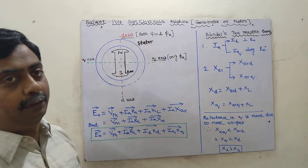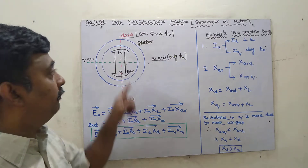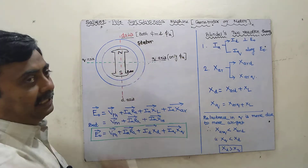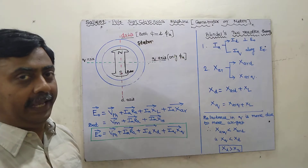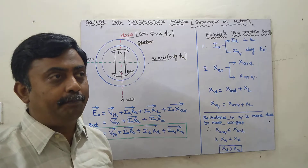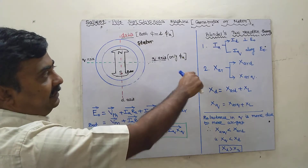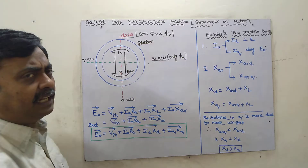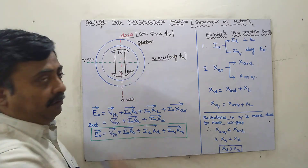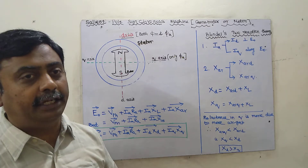The axis along the magnet — called the main axis, field axis, or D-axis (direct axis) — and the axis perpendicular to it is called the quadrature axis or Q-axis. In the non-salient pole synchronous machine, there is only one axis. But here we have two axes: the direct axis (D-axis) where the air gap is minimum, and the quadrature axis (Q-axis) where the air gap is maximum.